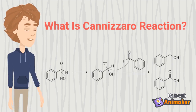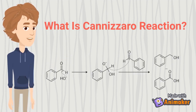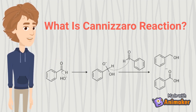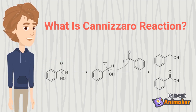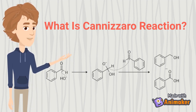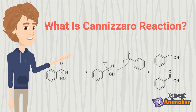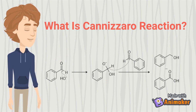The Cannizzaro Reaction Mechanism details the method to get one molecule of alcohol and one molecule of carboxylic acid from two molecules of a given aldehyde. The reaction is executed by a nucleophilic addition on an aldehyde, where the leaving group attacks another aldehyde.